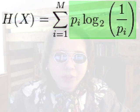To the right of the sigma, there's an expression, the probability of symbol i times log base 2 of 1 over the probability of symbol i. And we're going to do that for the probabilities of all of the symbols of information source X.